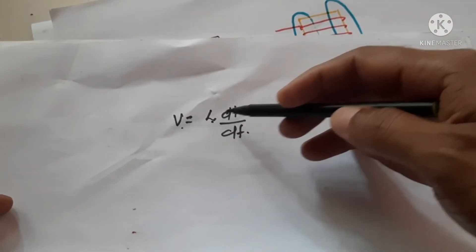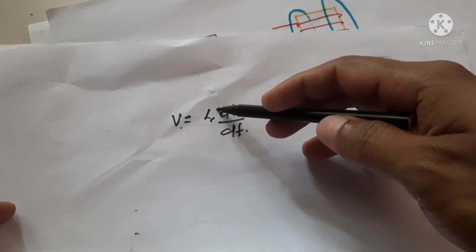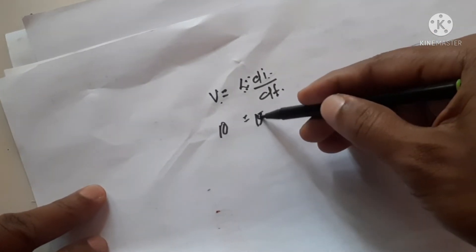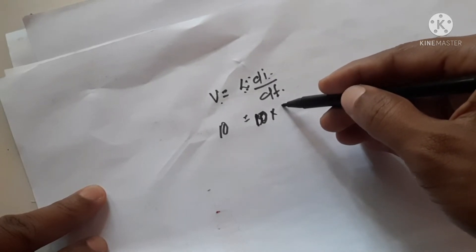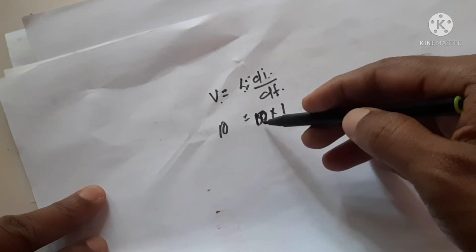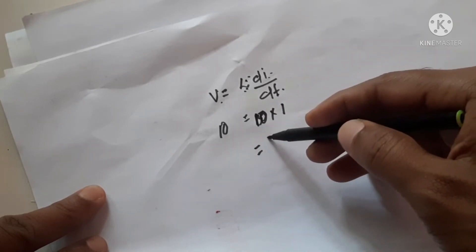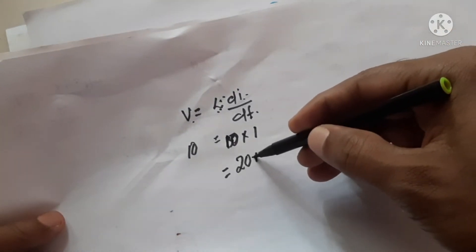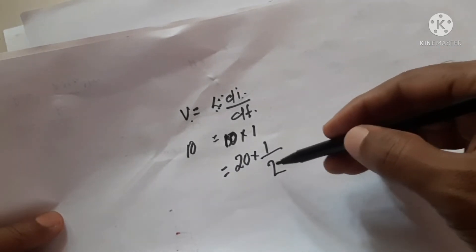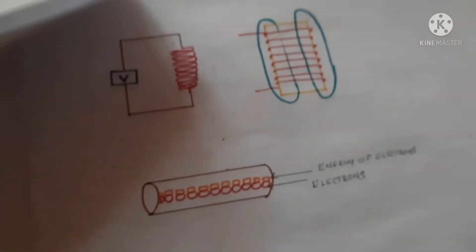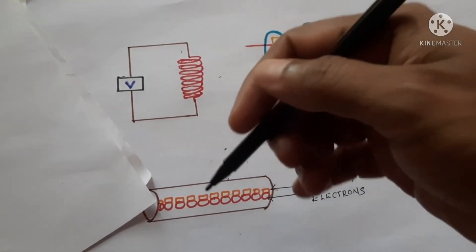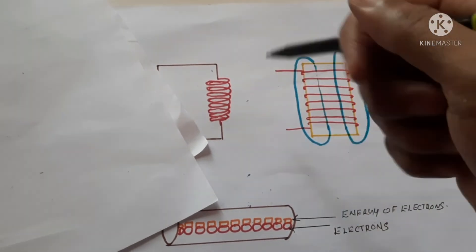We can prove this with an equation. The voltage across an inductor is V = L × di/dt. If we increase the inductance, di/dt is reduced. For example, if the voltage is 10 V and inductance is 10 H with di/dt = 1, then increasing inductance to 20 H requires di/dt to decrease to 0.5 to keep voltage at 10 V. So when inductance increases, more energy is taken from each electron and current decreases, but the inductor stores more energy.